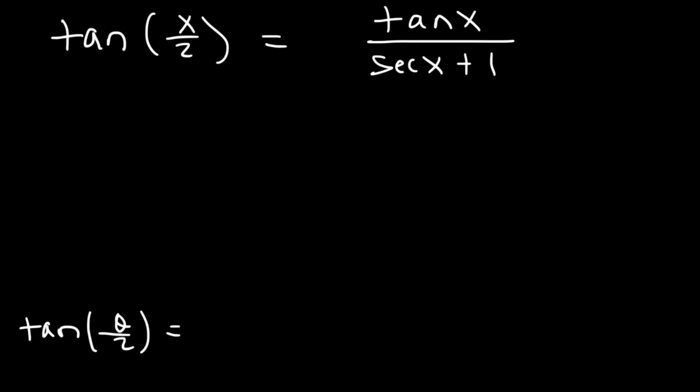Let's work on one more example. Prove that tangent x divided by 2 is indeed equal to tangent x divided by secant x plus 1. Now tangent theta over 2 has many different forms. The form that I'm going to use is this one, sine theta divided by 1 plus cosine theta.